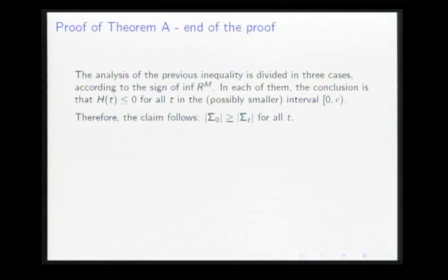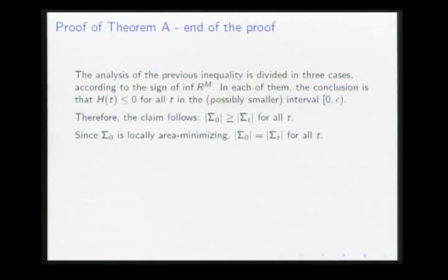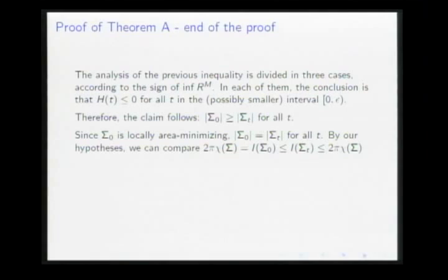After that, we assume sigma_0 is locally area-minimizing, so each sigma_t must have the same area as sigma_0 and must also be locally area-minimizing. By our hypothesis we can compare I(sigma_0) with I(sigma_t), and we have equality. By the first part, each sigma_t is infinitesimally rigid. So our foliation is in fact a foliation by free-boundary totally geodesic surfaces, and we can conclude the local splitting. This is the end of the proof.